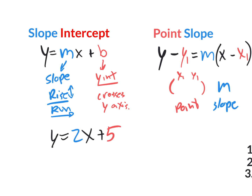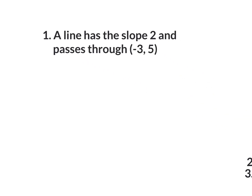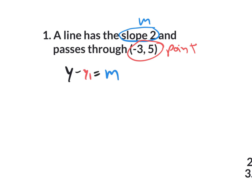Let's go through some examples. A line has the slope 2 and passes through the location negative 3, 5. I'm giving you the slope — that's the m value — and a point. So we're going to go with point-slope form. I recommend rewriting the point-slope form every time you use it until you memorize it: y minus y1 equals m times (x minus x1).